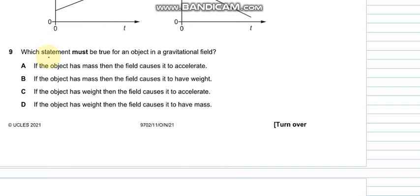Question number nine asks which statement must be true for an object in a gravitational field. If the object has mass then the field causes it to accelerate - no, it can also move with constant velocity. If the object has mass and the field causes it to have weight - yes, because W equals MG. That seems to be the correct option.